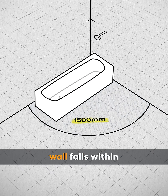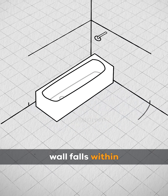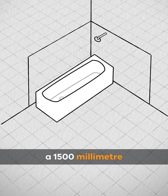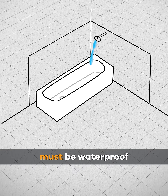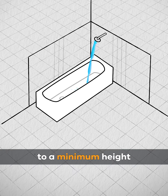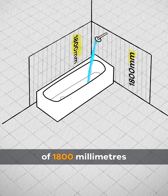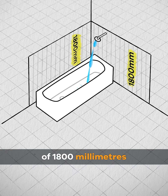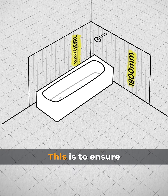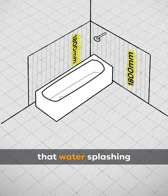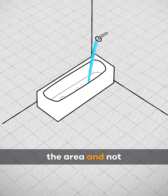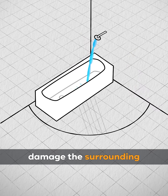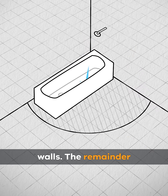If any part of the wall falls within a 1500mm radius without a screen, that wall must be waterproofed to a minimum height of 1800mm from the floor. This is to ensure that water splashing from the shower will be contained within the area and not damage the surrounding walls.